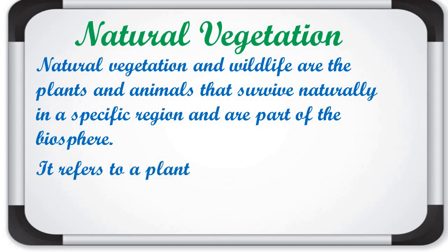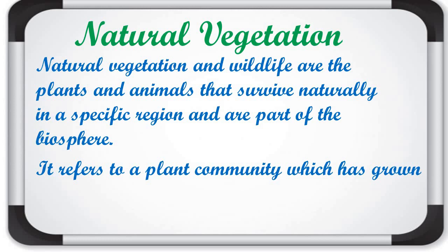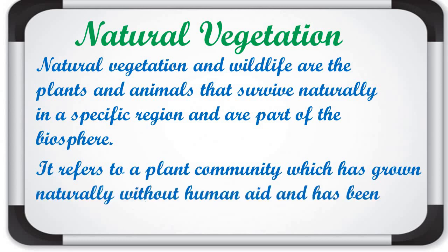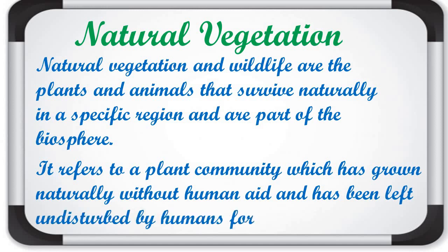Natural vegetation refers to a plant community which has grown naturally without human aid and has been left undisturbed by humans for a long time. These vegetations grow in the natural environment without any help or interference of human beings — these are natural vegetations.